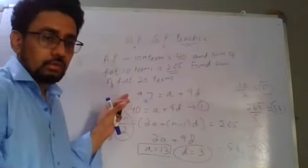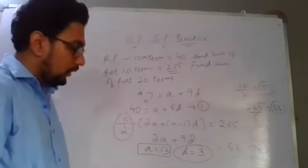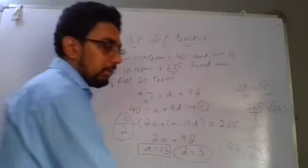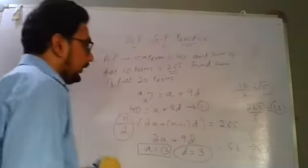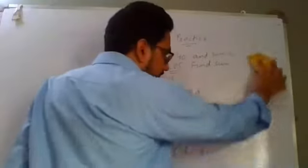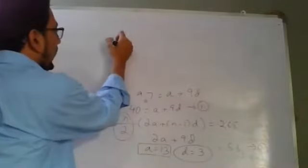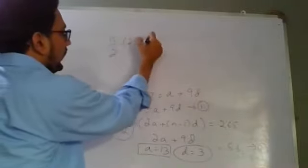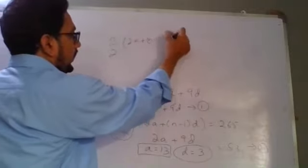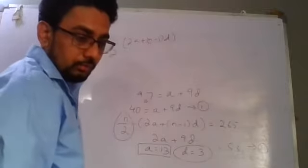That is the first term. And D is coming 3. Have you written this now? So A is coming 13, D is coming 3. Now the question was asking the sum of the first 20 terms. So for the first 20 terms, what do we have to do? N over 2, 2A plus N minus 1 into D. This is the formula.